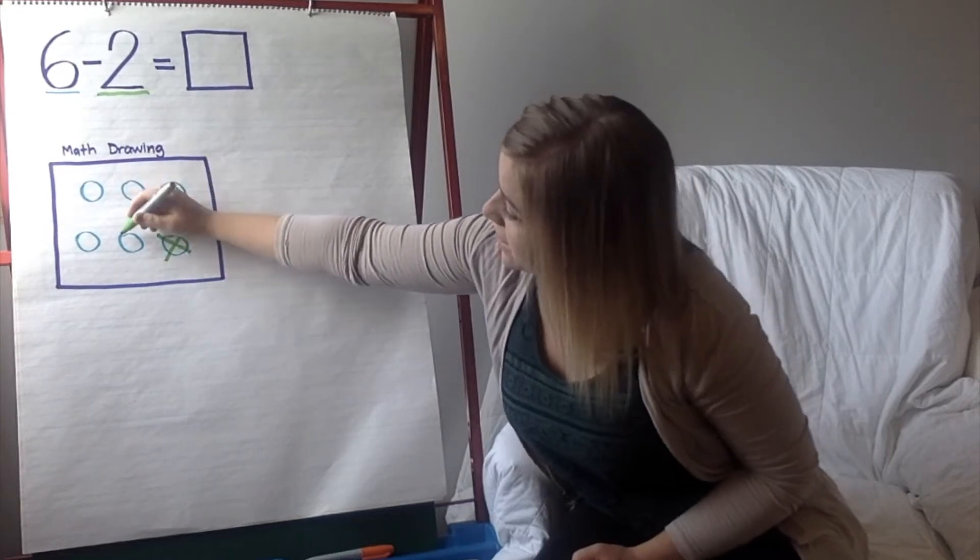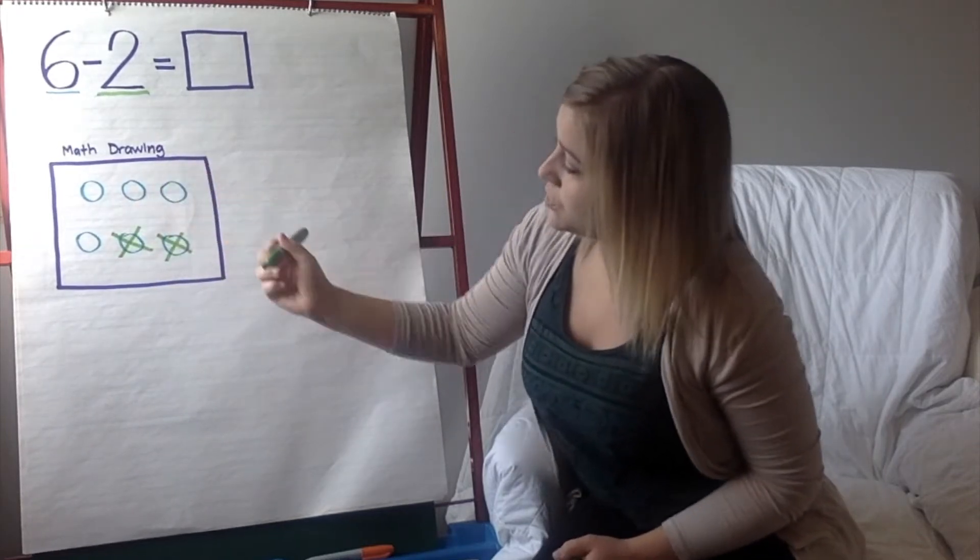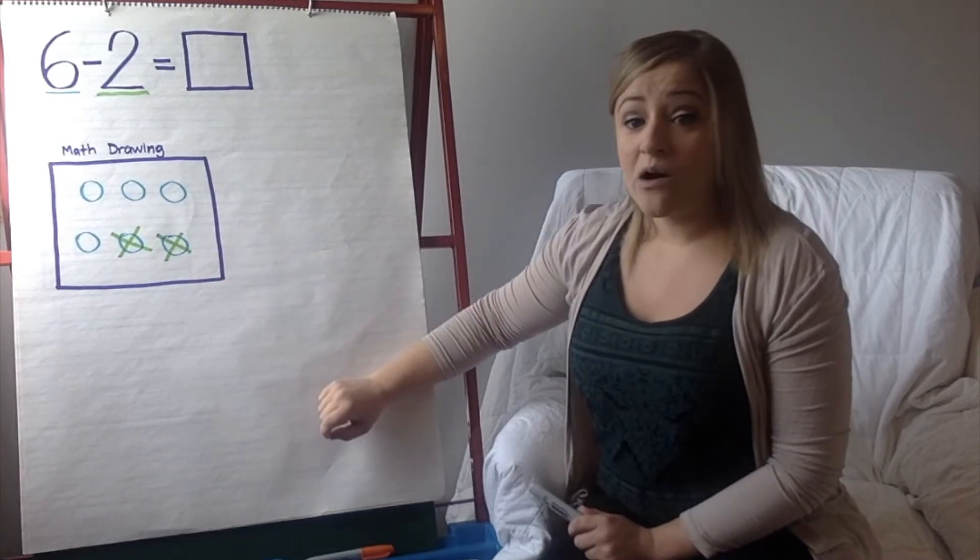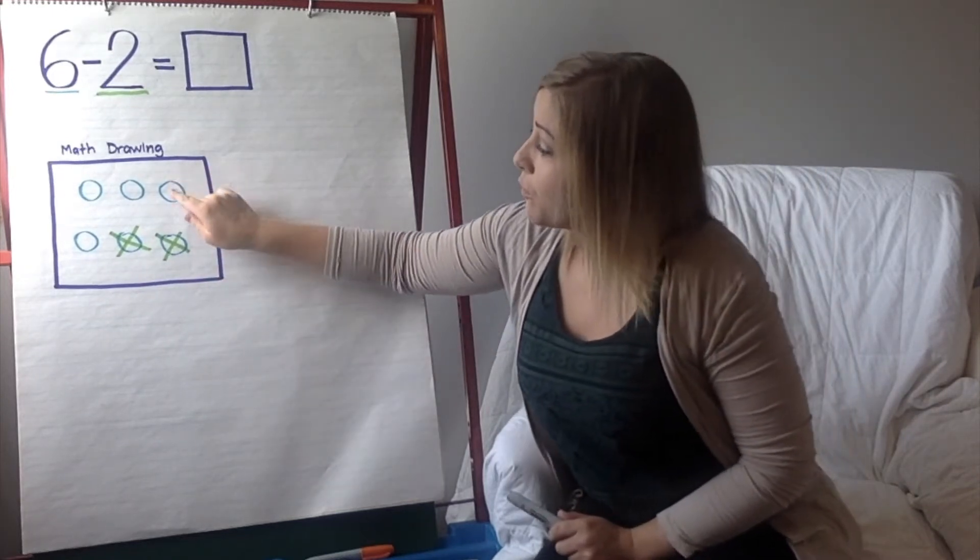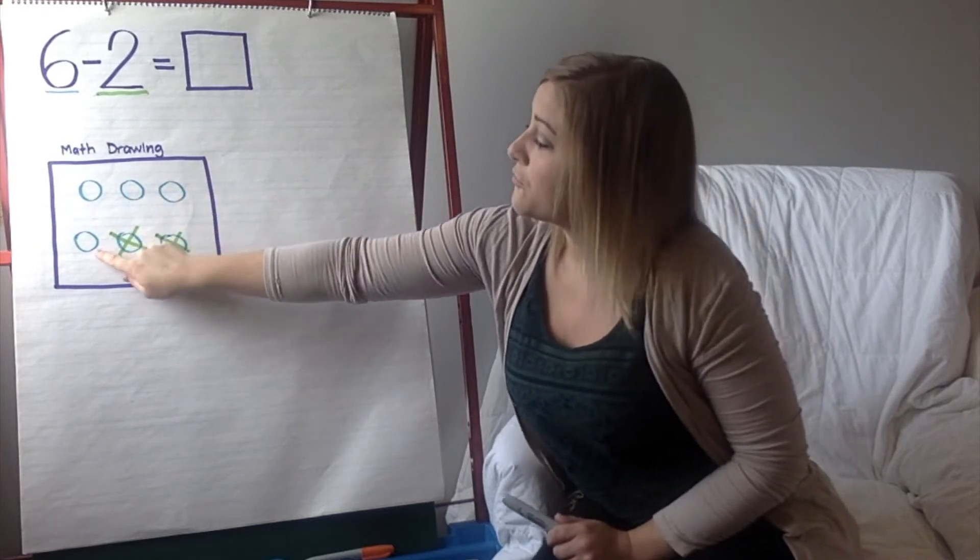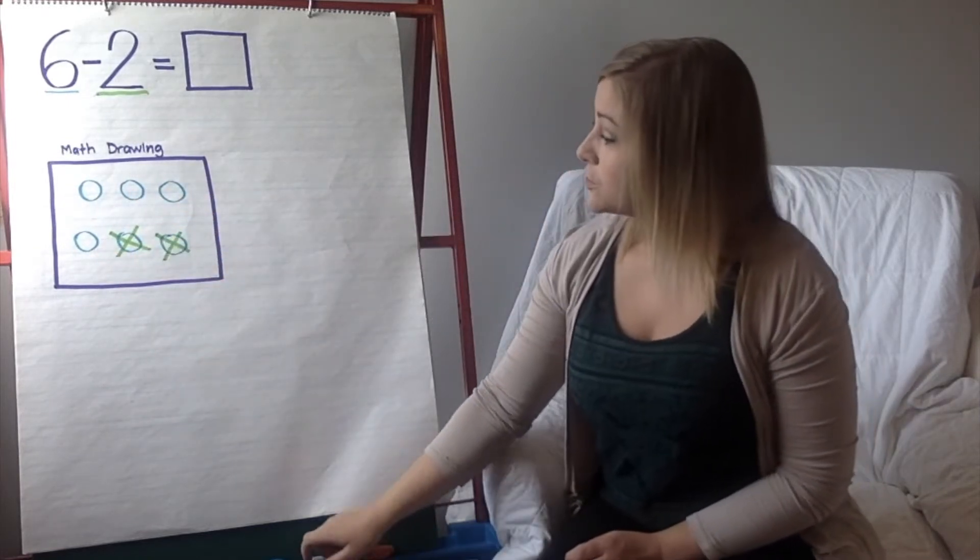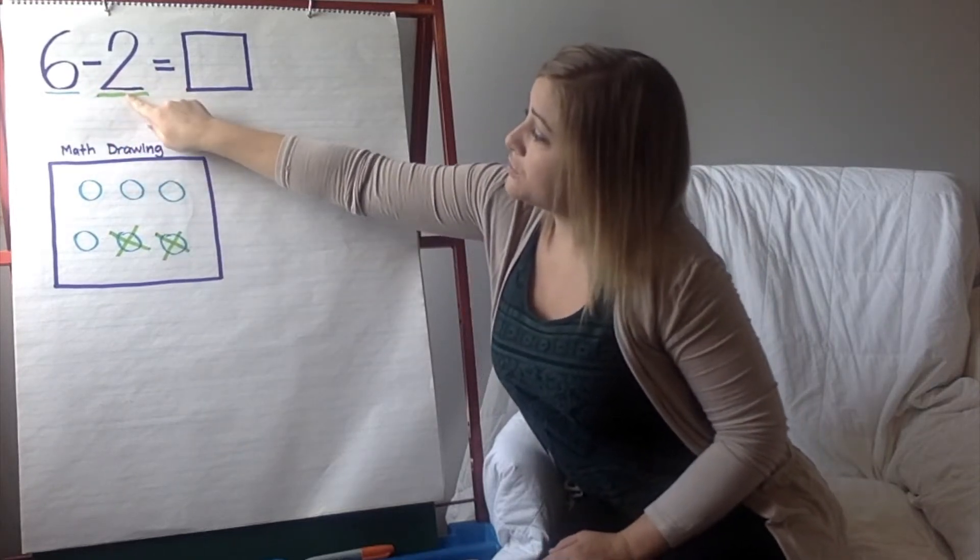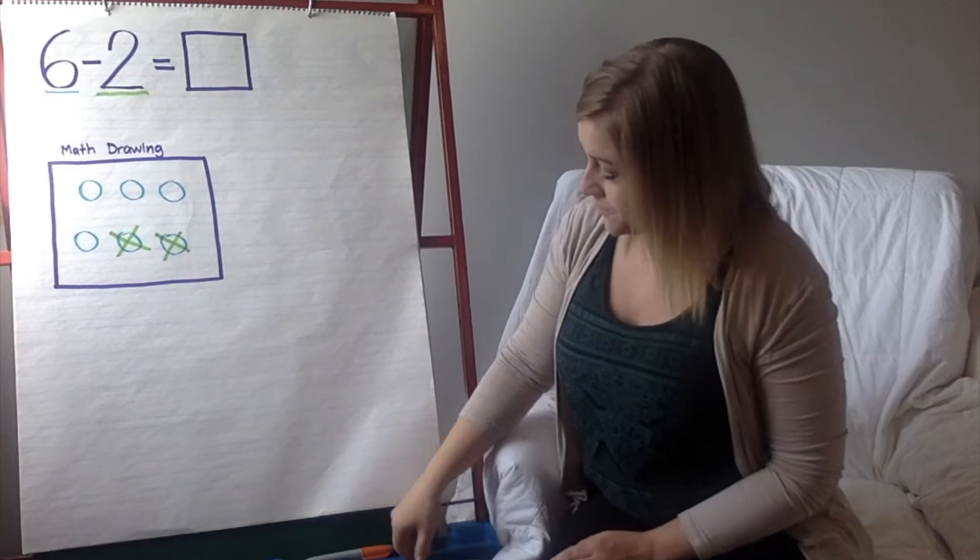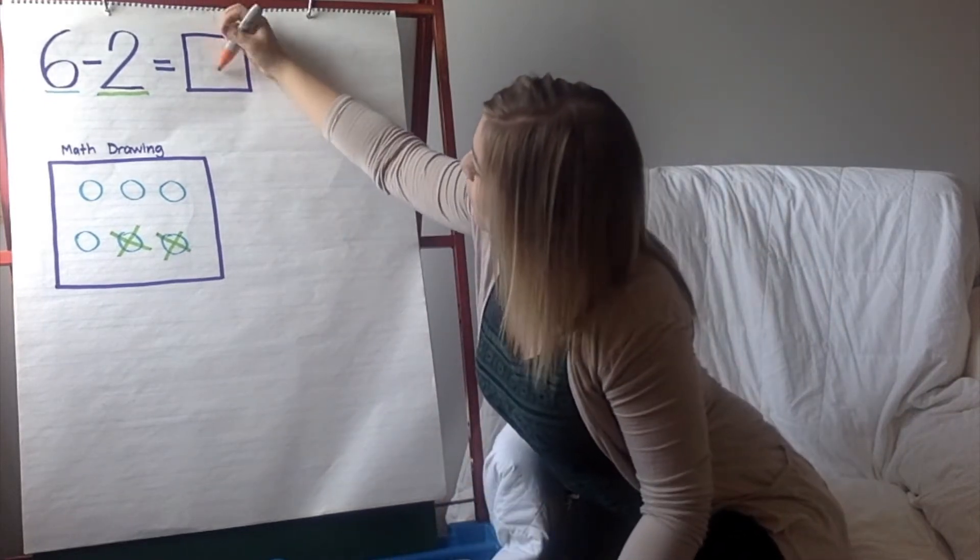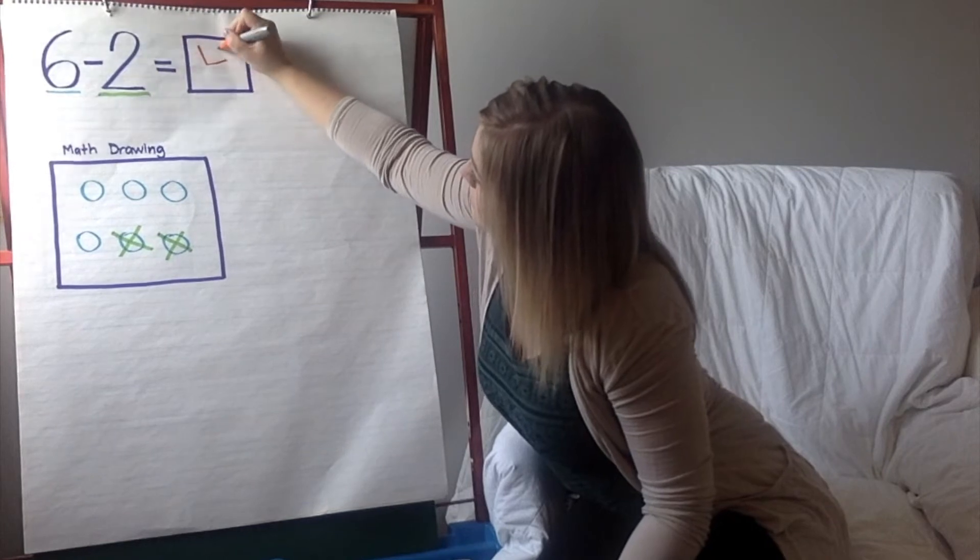Now, I'm left with, let's count, 1, 2, 3, 4 circles. So, when you start with 6 circles, and you take away 2 circles, we get the answer of 4 circles.